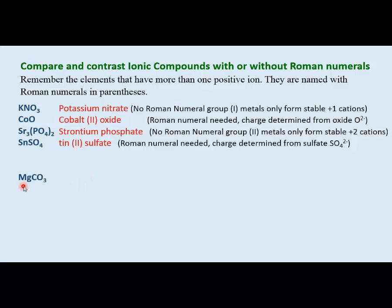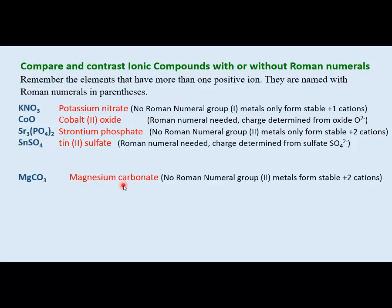For magnesium carbonate, MgCO₃: magnesium is in Group 2, only forms +2 cations. Carbonate has a -2 charge, balancing perfectly. The name is magnesium carbonate — no Roman numerals needed. Using Roman numerals here would incorrectly suggest magnesium can form other stable cation charges.